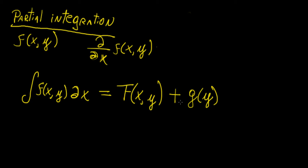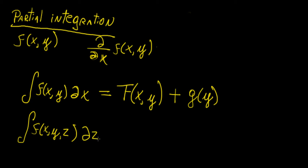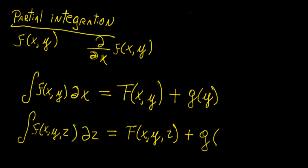So this is the core concept behind partial integration: we get a function that serves as the constant, which is a function of the variables we're treating as constants during integration. Similarly, if we have a function of three variables and we want to integrate with respect to z, we're going to get another function of all three variables plus a function of the variables that were not integrated with respect to — in this case x and y.